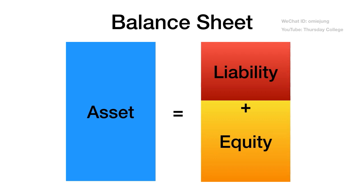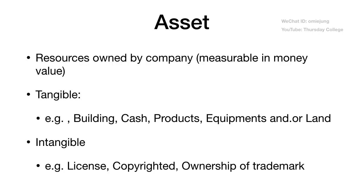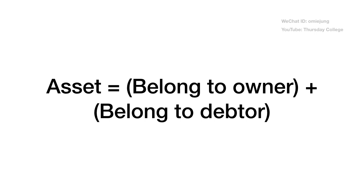The balance sheet is the meaning of your business. You have assets — asset means everything your company owns. It can be products, equipment, or other stuff. The asset must be equal to liability and equity. When you evaluate it in terms of money it must be equal. Assets are resources owned by the company and measured in money. They can be tangible, like buildings, cash, products, equipment, or land, or intangible, like licenses, copyrights, or trademarks.